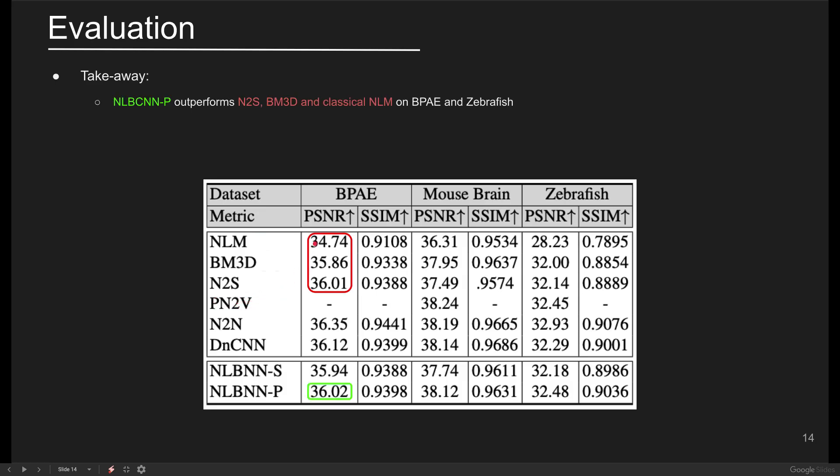For the BPAE datasets, NLBCNNP outperforms non-local mean, noise-to-self, and BM3D while lagging behind the noise-to-noise and noise-to-true methods. The red and green boxes show the loser and winning methods respectively.